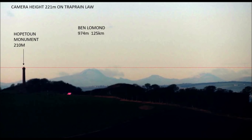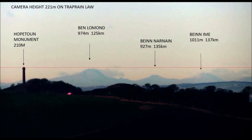But we can see Ben Lomond at 974 metres above sea level, Ben Narnain at 927 metres above sea level, and Ben Im at 1,011 metres above sea level — and all of these mountains appear completely below the line. That's impossible if the Earth is flat. But of course, very possible if the Earth is spherical or curved in some way.